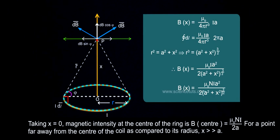Taking x equals 0, magnetic intensity at the center of the ring is B_center equals mu_0 n i by 2a.